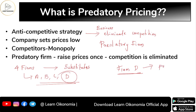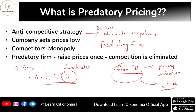Firm D will set the prices of its products at a low level, reducing the price of its commodity. Since all four firms produce substitutes, firm D's product becomes cheaper in the market compared to the products of the other firms.